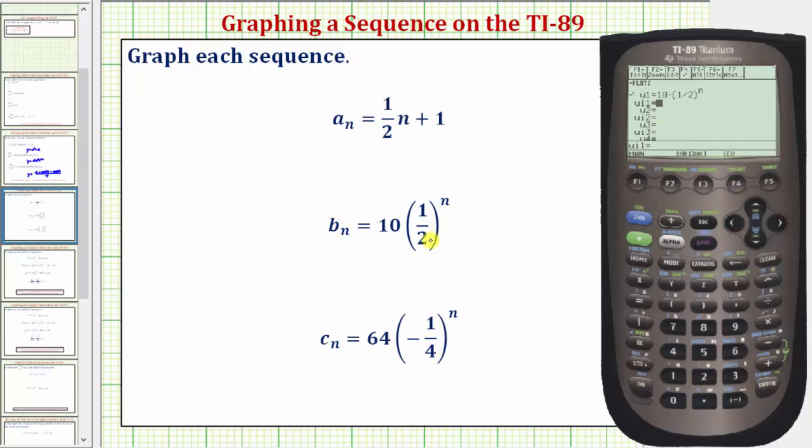I think for this sequence the same window will be fine if we want to see the first ten terms of b sub n. So we'll press diamond F3.